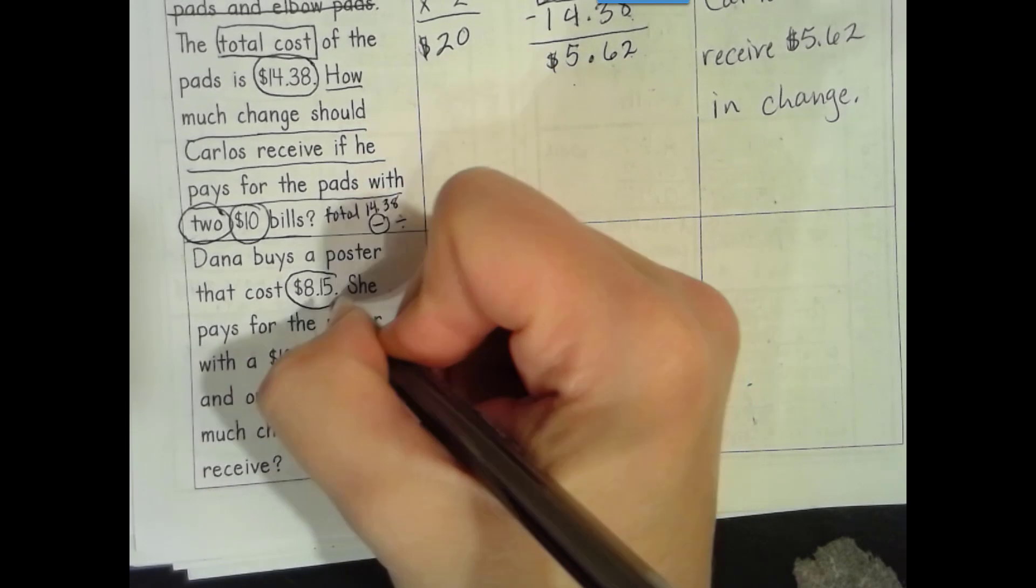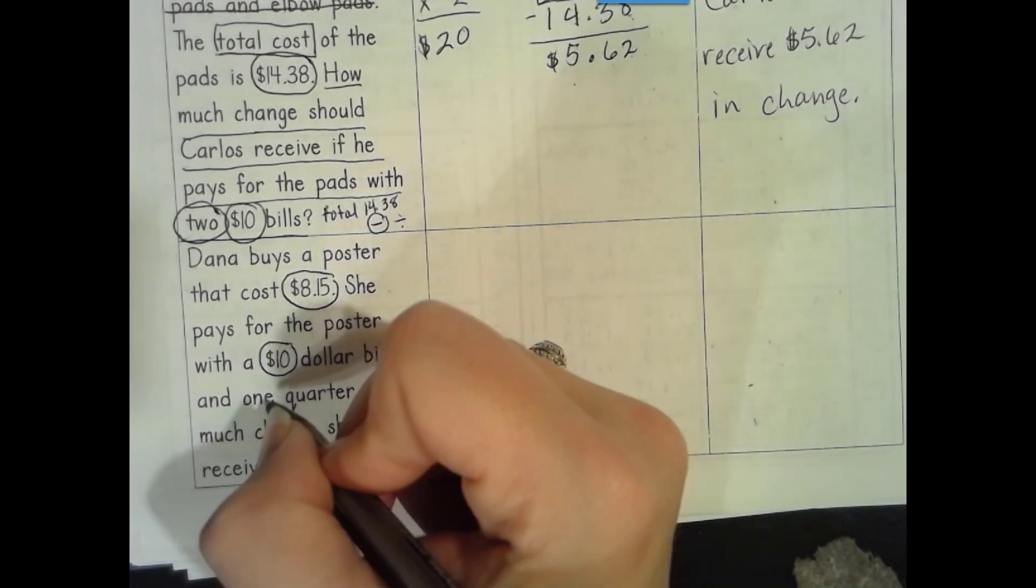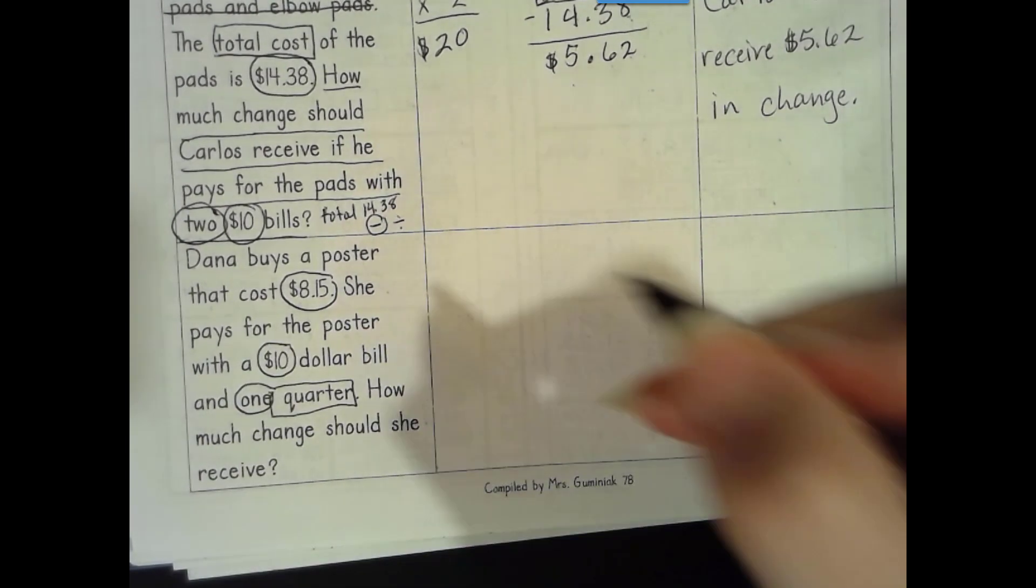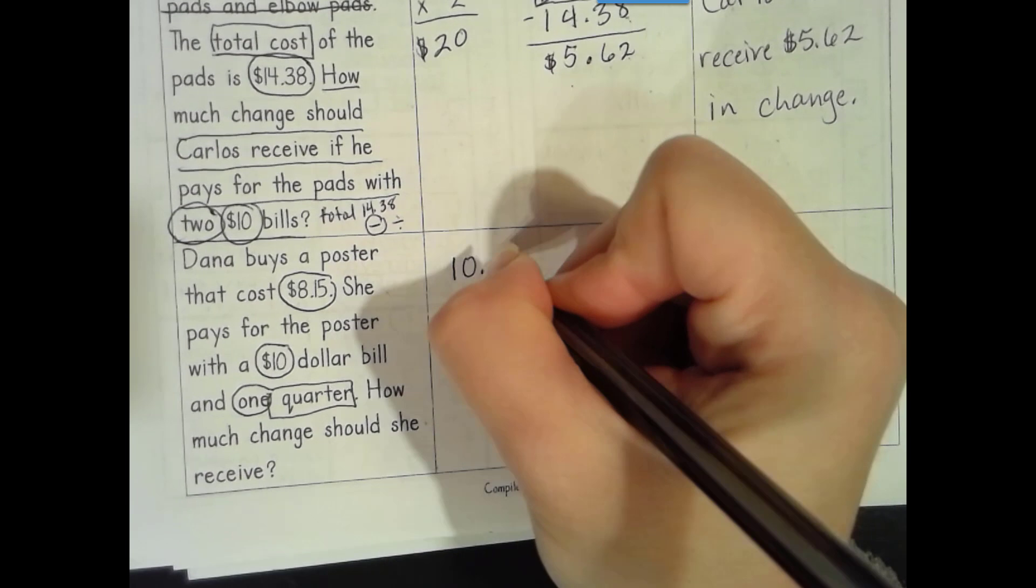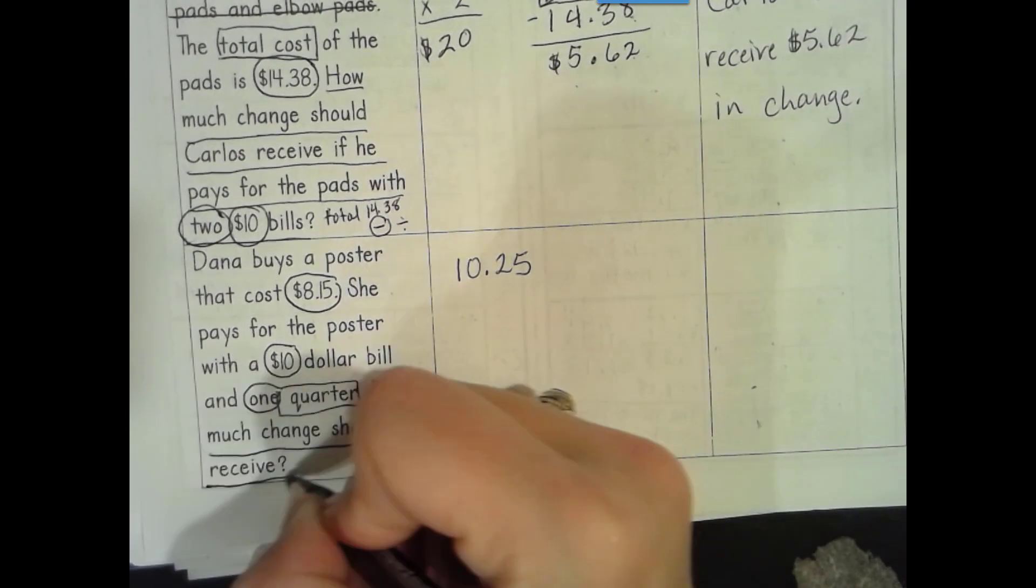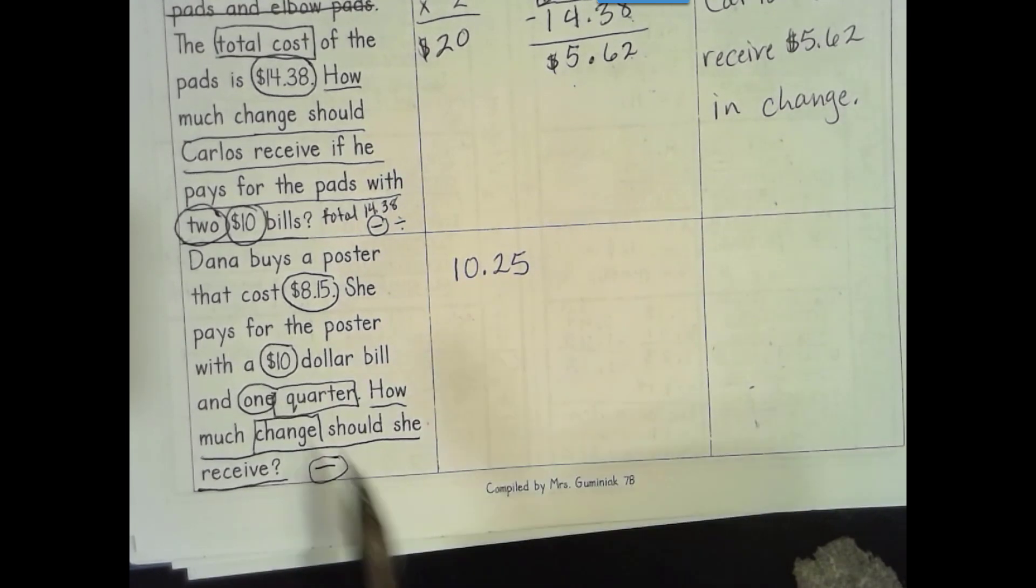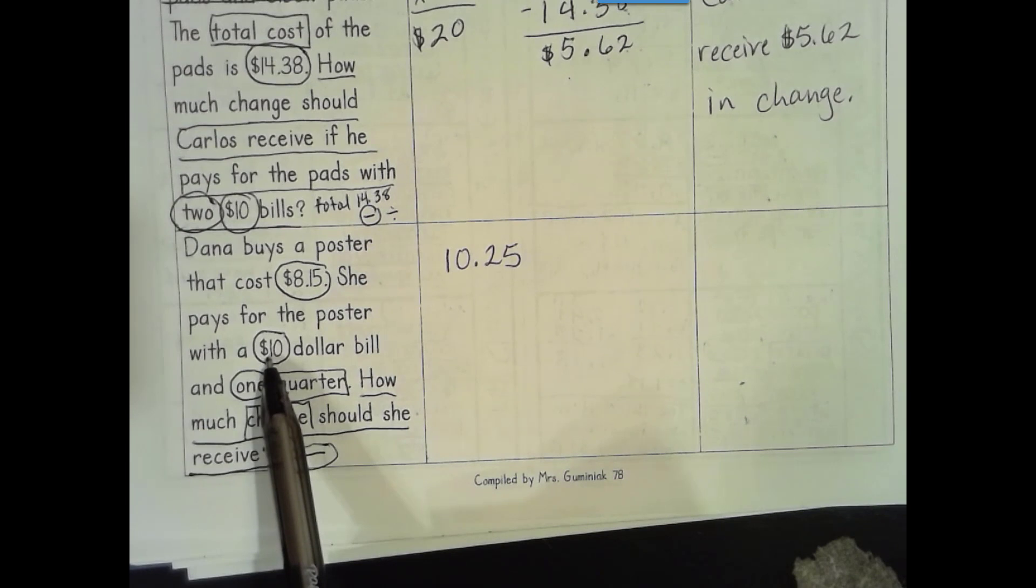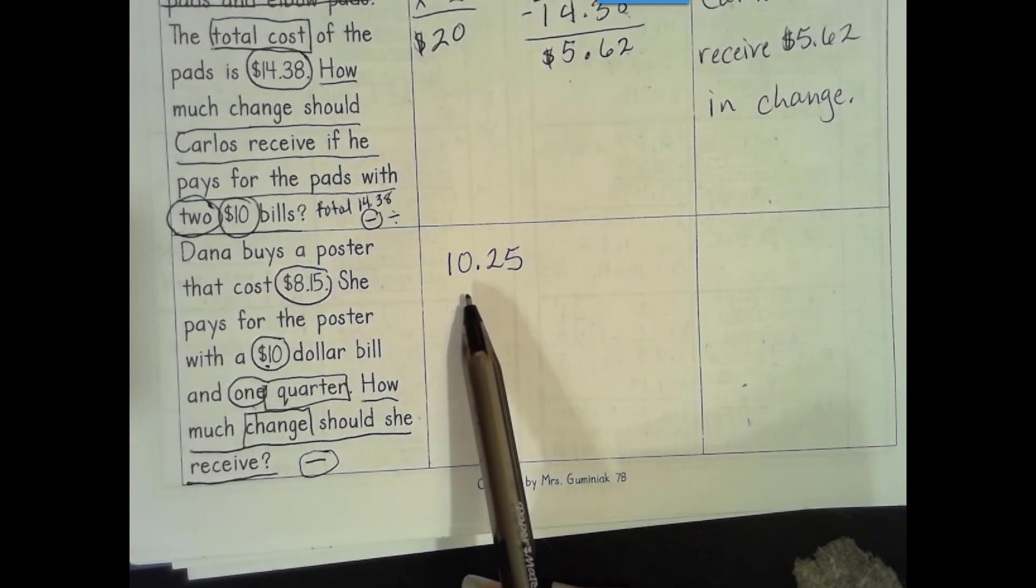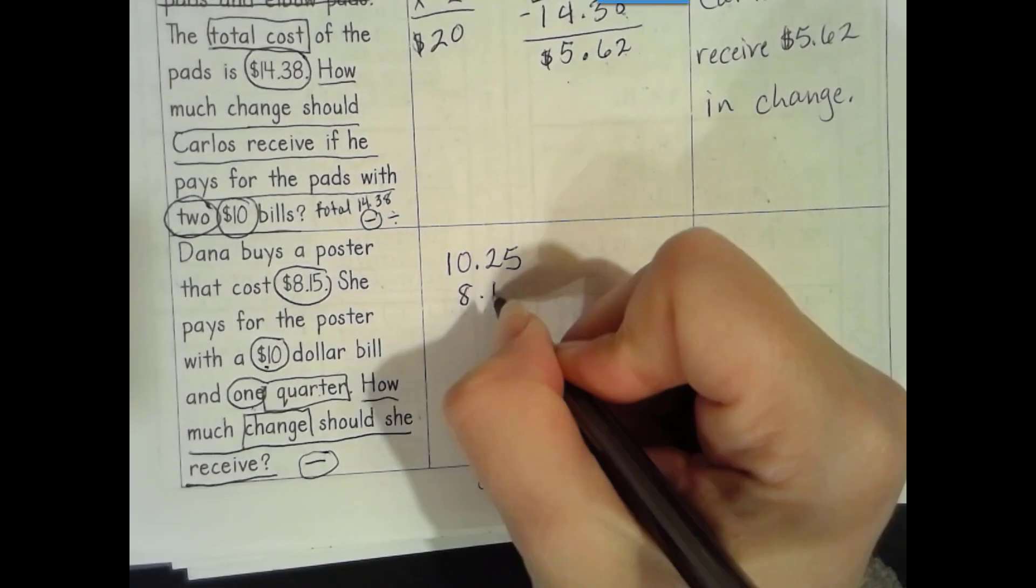Dana bought a poster that costs $8.15. She pays for the poster with a $10 bill and one quarter. So how much does she have? She has $10 and one quarter, which is 25 cents. How much change should she receive? So again, we're looking for change. That's going to be a difference. We're going to subtract. So this is where you have to be careful to make sure you read carefully that it's $10 and one quarter. They could have just said she had $10.25, but they didn't. You have to make sure that you get that down. And she spent $8.15.